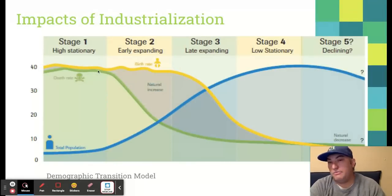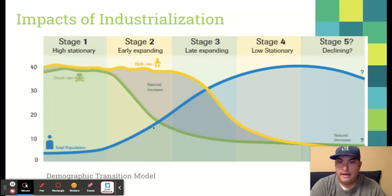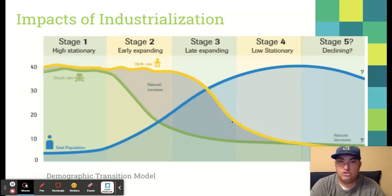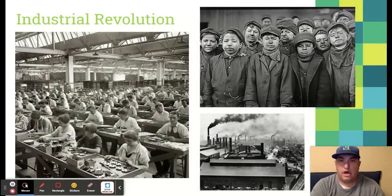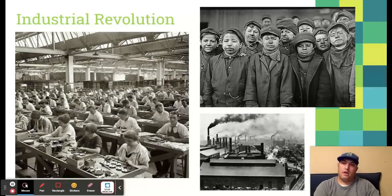Because of the Agricultural Revolution, people weren't as necessary in rural settings anymore, and they moved to cities to find jobs in more industrial settings. Because of better sanitation and better healthcare and medicine, we start to see death rates fall. Then birth rates also start to chase that down because we don't need as many people to work farms anymore. But in stage two and stage three, we see a very large increase in world population. So the Industrial Revolution comes in around stage two and stage three of the demographic transition — we're seeing a lot more people moving to cities, working in dangerous factory jobs.